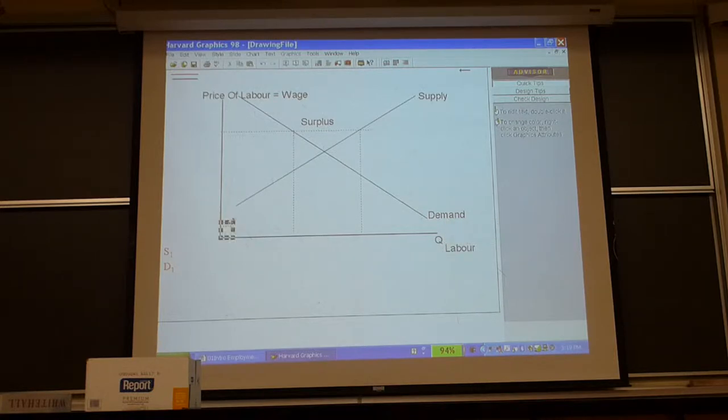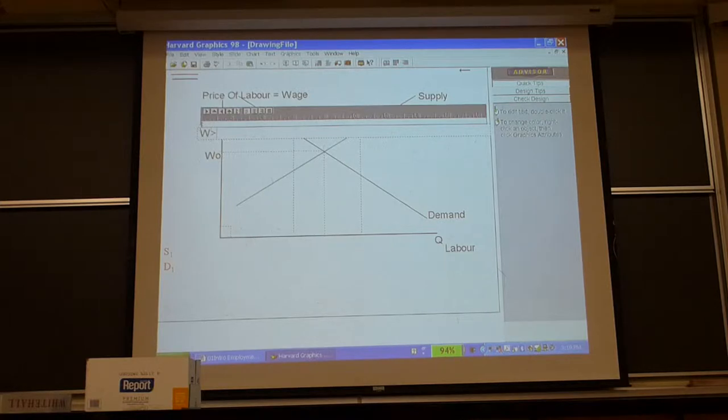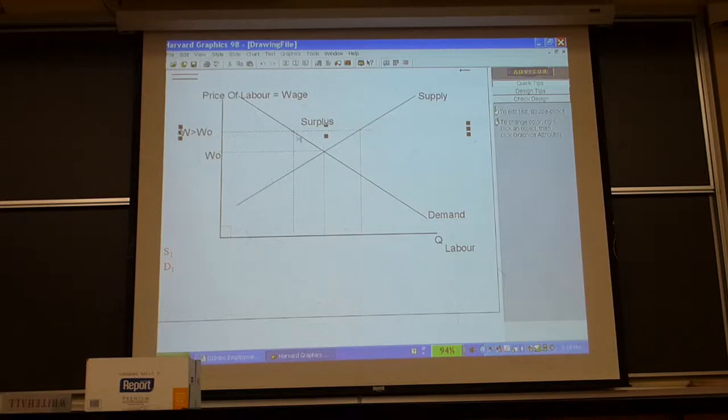This is the quantity of labor. And this is the equilibrium wage. What does unemployment mean in this context? It simply means W greater than W zero. It simply means the wage is too high. At this particular wage, the quantity demanded of labor is less than the quantity supplied of labor. But if the wage falls, we get full employment right there.